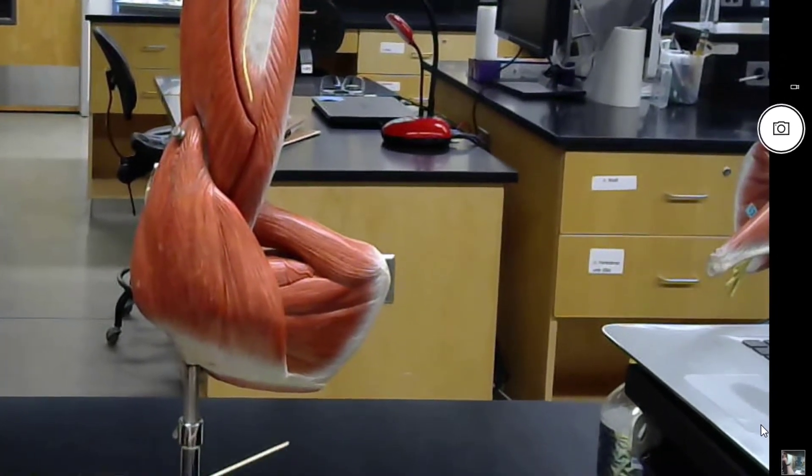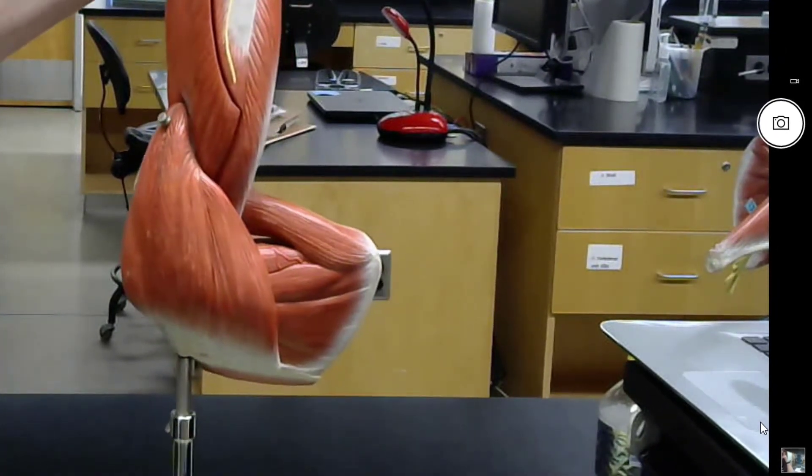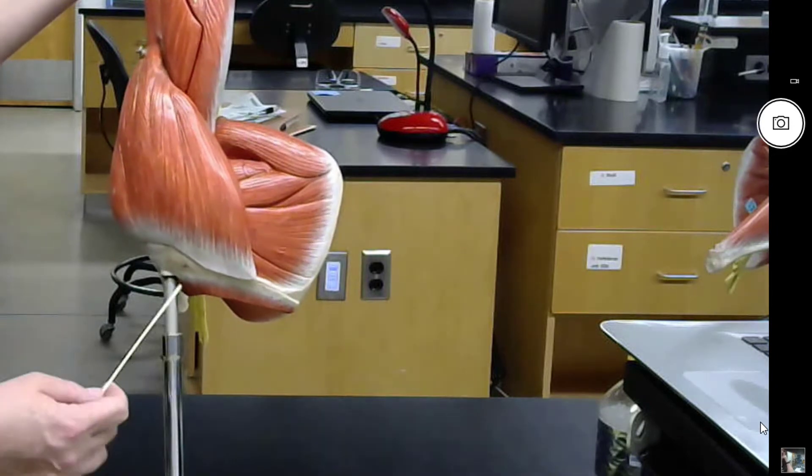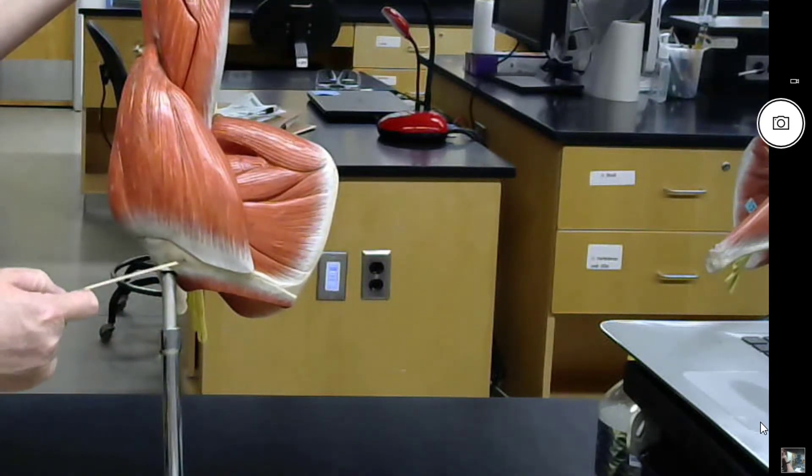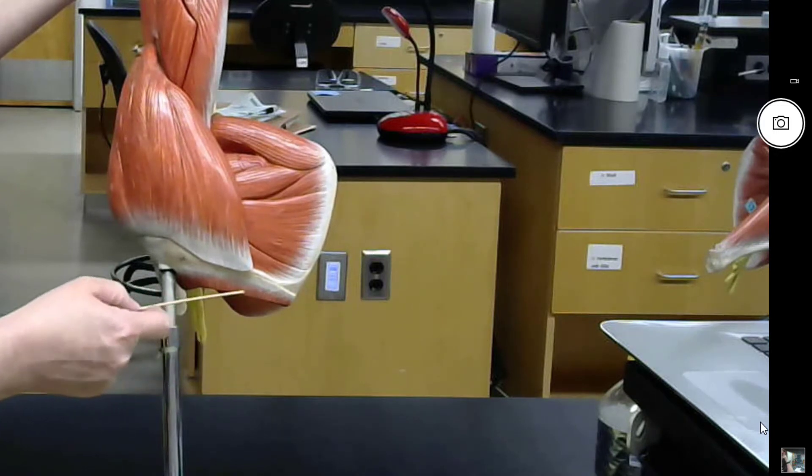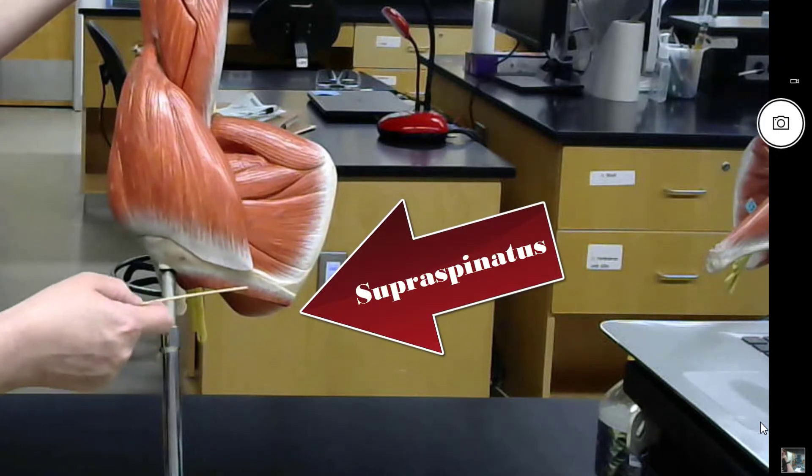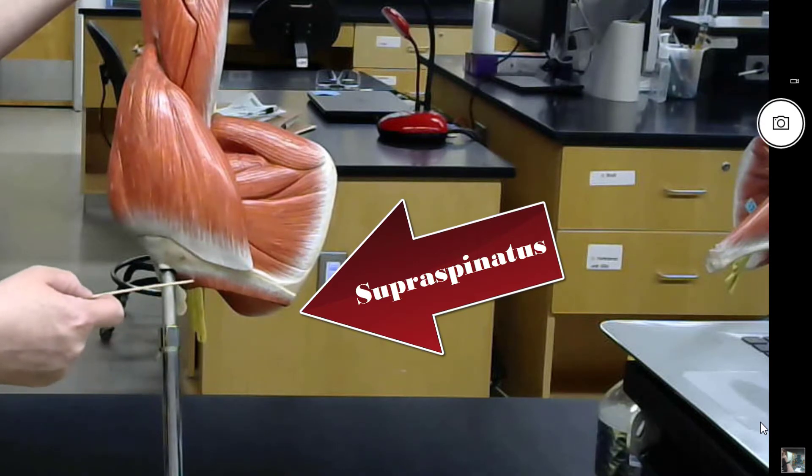All right, so the first one's kind of hard to see. But we know since this is the spine of the scapula, then we know that this muscle here must be the supraspinatus, the supraspinatus muscle.